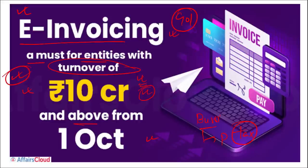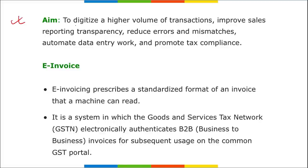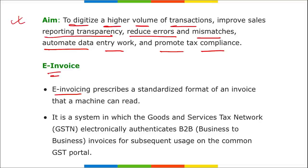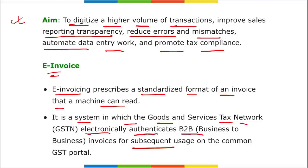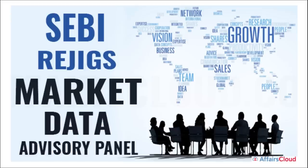By decreasing the required turnover level under the GST regime from 20 crore to 10 crore, the government has expanded the scope of electronic invoicing. The government plans to further reduce this to 5 crore in the current financial year. The aim is to digitize higher volume transactions, improve sales reporting transparency, reduce errors, automate data entry, and promote tax compliance. E-invoicing is a system where the GST Network electronically authenticates B2B invoices on the common GST portal.